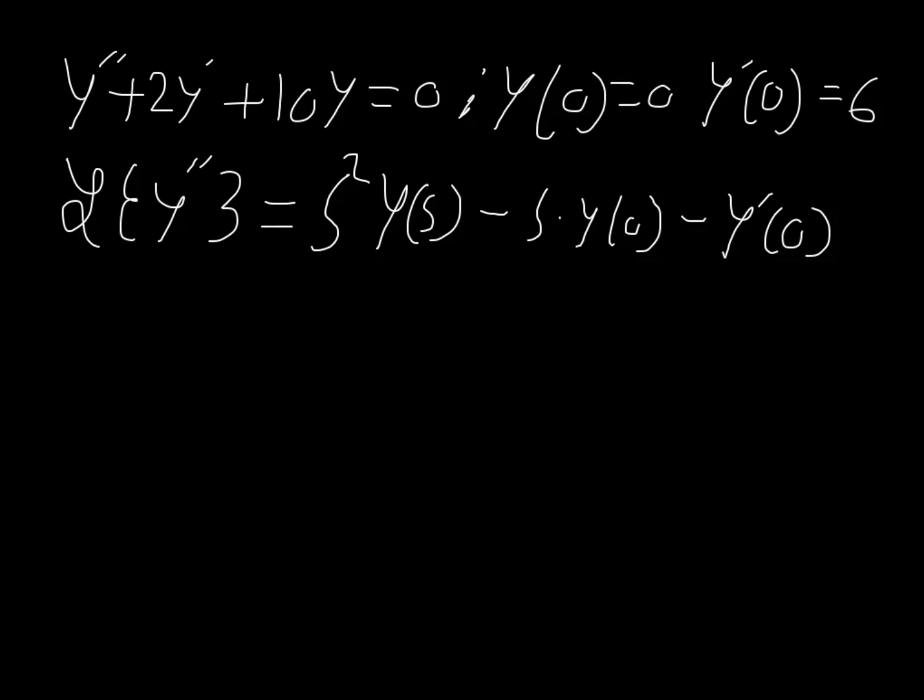And that's just dealing with the first term. So let's deal with the second term, the Laplace of 2y prime. Now we know with constants, we can just pull them out. So this will just be 2 times the Laplace of y prime. So let's deal with what the Laplace of y prime will be. If you couldn't tell from what was above, it's simply going to be s times y sub s minus y sub 0. And remember, that's in the t domain, this is our initial condition.